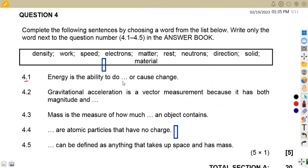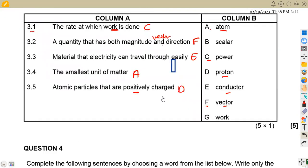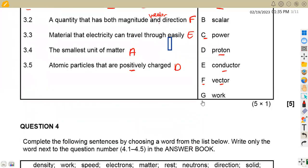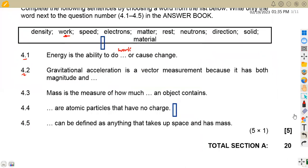On 4.1, energy is the ability to do what? Or cause change. Energy is the ability to do work, or cause change. Gravitational acceleration is a vector measurement because it has both magnitude and - this is a repetition. A vector must have magnitude and direction. They are asking the same thing here. It must have magnitude and direction because it's a vector. Mass is the measure of how much of an object contains - this is how much matter an object contains. We have matter.